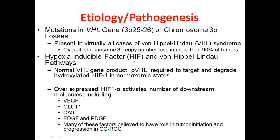Regarding the pathogenesis, normally the VHL gene when transcribed and translated produces a protein called pVHL, which is required to target and degrade the hydroxylated form of hypoxia-inducible factor 1 (HIF-1) when oxygen saturation is normal. However, when there is a mutation in the VHL gene or a loss of chromosome 3, this normal protein is not produced and there is no degradation of HIF-1.